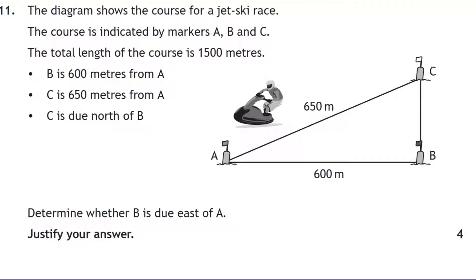C is due north of B, giving us the north line. If B is due east of A, the triangle should be right-angled. We find the missing side: 1500 − 650 − 600 = 250 metres. Now we check: does a² + b² = c²? We test 250² + 600² against 650².